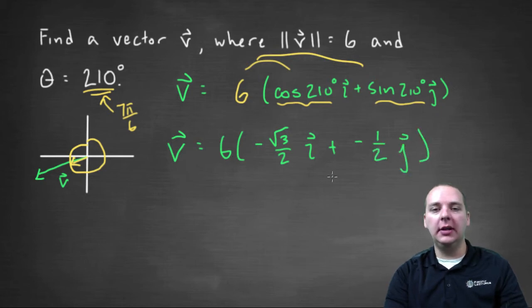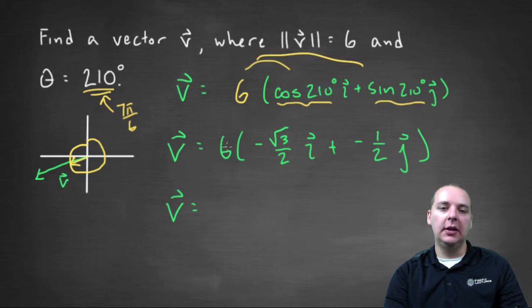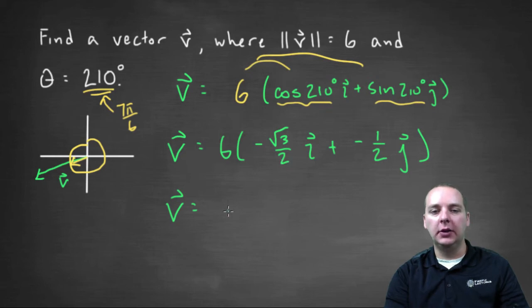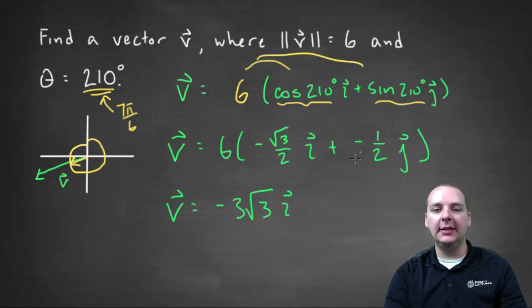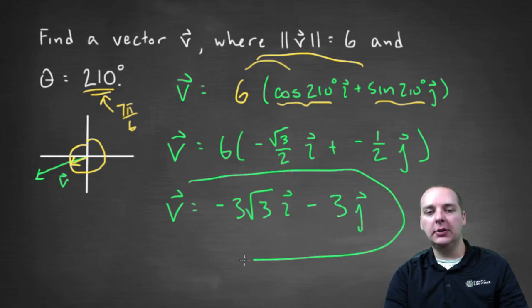Now we distribute the scalar of six through. Vector v would be: six times root three over two — six over two is three — so that gives us negative three root three for the i component. And six times negative one half gives us minus three j. So our final answer is negative three root three i minus three j.